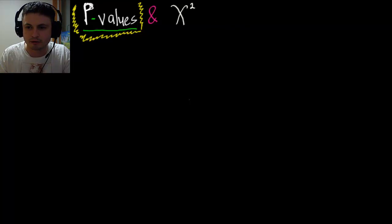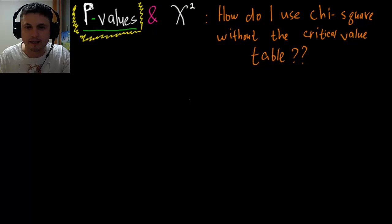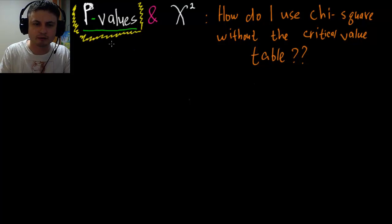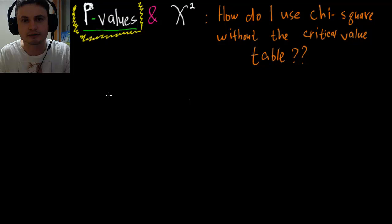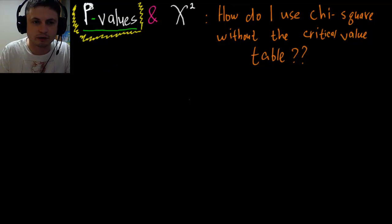Basically this was to help us answer this question: how do we use the chi-square without the critical value table? Basically how do we actually solve for the null hypothesis? How do we find if our null hypothesis is incorrect if we don't have the critical value or if we're not given the table?